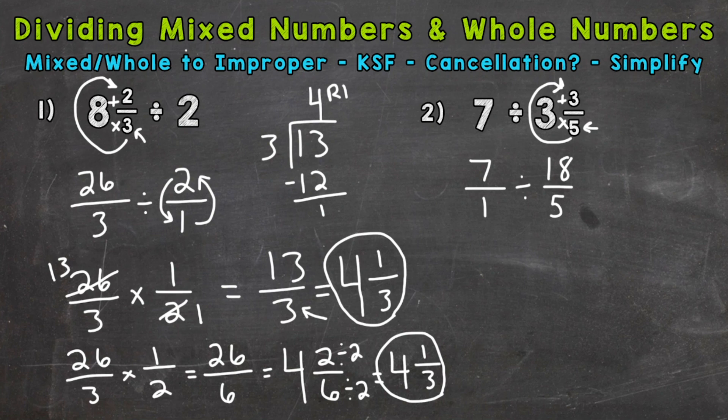So now we're ready for the dividing fraction steps: Keep, Switch, Flip. So always keep your first fraction. Switch to multiplication. And then we flip. So we have 5/18. Now we're ready to multiply straight across. But we can look for cancellation. In the case of number 2, the only common factor between our numerators and denominators is 1. So we can't use cancellation. So we go right to multiplying straight across.